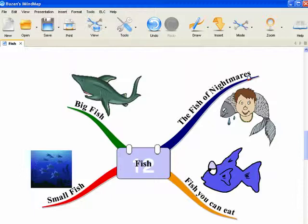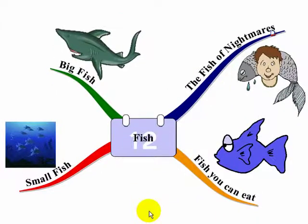Let's have a look at how you can change the central image on your mind map. So you've created a very excellent mind map about a particular topic and you suddenly realize that your central image doesn't really reflect what the mind map is about. So here's my map about fish: about big fish, about small fish, about fish you can eat, and even the fish of nightmares.